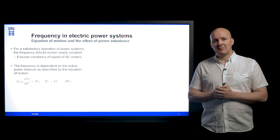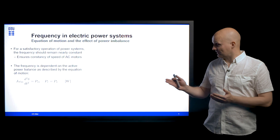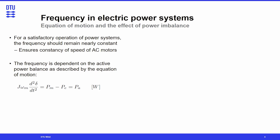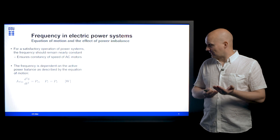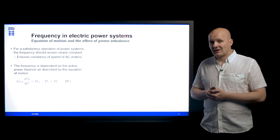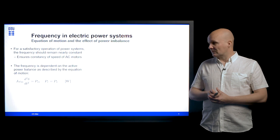So it's of fundamental importance that we control the frequency and keep it close to the system's nominal value. The frequency is dependent on the active power balance described by the equation of motion, which is listed here. The equation of motion states that the moment of inertia times the angular velocity of the machines, or the frequency, times the angular acceleration equals the mismatch between the input mechanical power PM to all of the generators in the system, and the electrical output of all of the generators, which covers both the system load and losses. If we have a mismatch between those powers, the machine will either accelerate or decelerate.